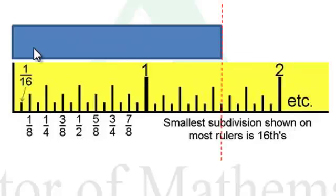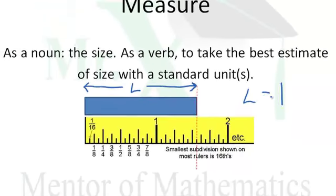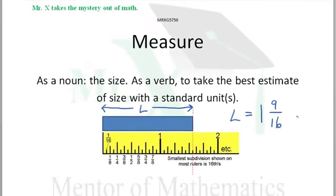So what would be the measure of this blue bar? What's the measure from here starting at zero all the way out to here? I believe that it would be one and nine sixteenths inches. Let's say the length of this blue bar is equal to one and nine sixteenths inches.